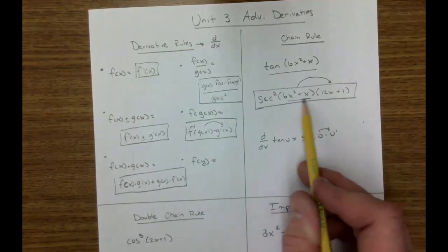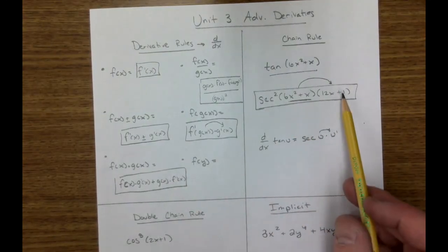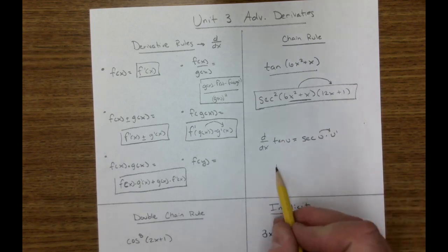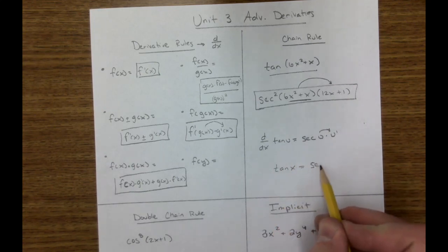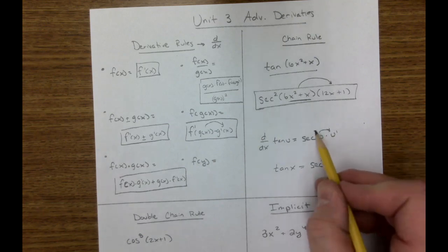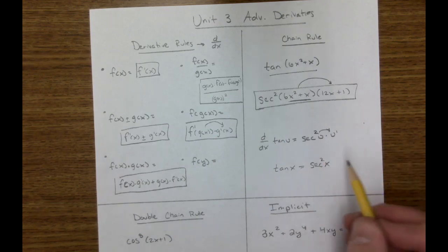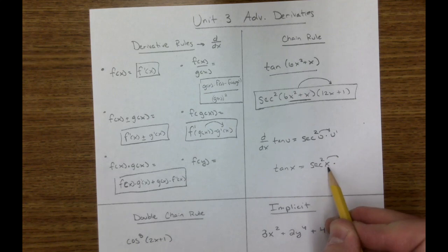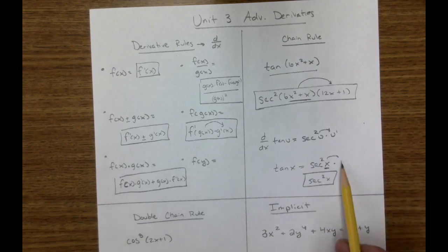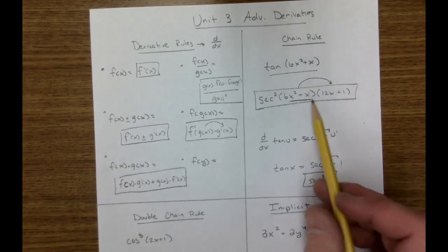We always have to remember the chain rule. If this inner term is not x, we're going to have to account for it. Now, if we just had tangent of x, and we go to take the derivative, that would be secant squared of x times, what's the derivative of x? Just 1. So, it's not necessary. It's not necessary to put a 1 here, but it is necessary up here.